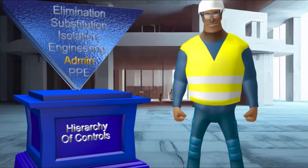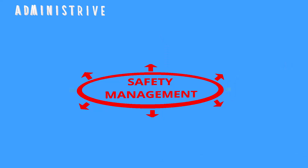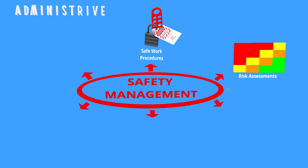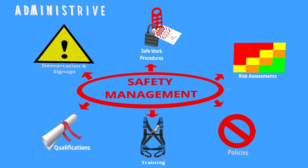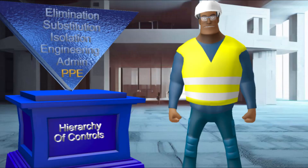Next on the hierarchy of controls is administrative controls. This includes safe work procedures, risk assessments, policies, training programs, qualifications, demarcation, and signage.